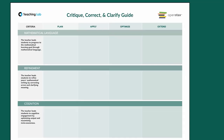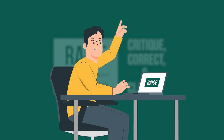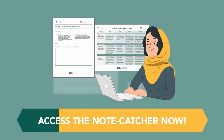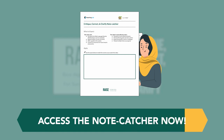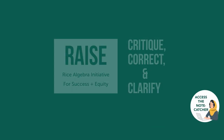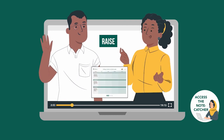Let's see Critique, Correct, and Clarify in action. Imagine you're a student in an Algebra 1 lesson and about to experience the mathematical language routine. To engage as a student during the model, please access the note catcher to record your ideas. Now that you have your note catcher, let's start the model. I will play the role of the teacher applying the routine, and I will narrate the steps of Critique, Correct, and Clarify as he models.